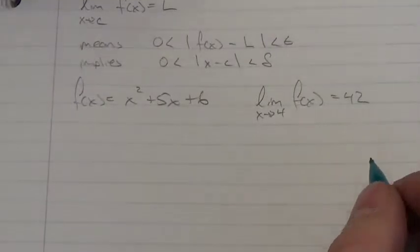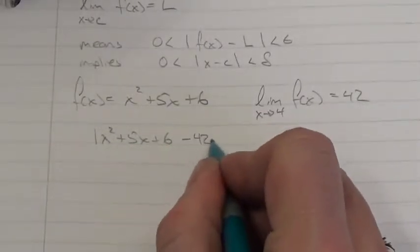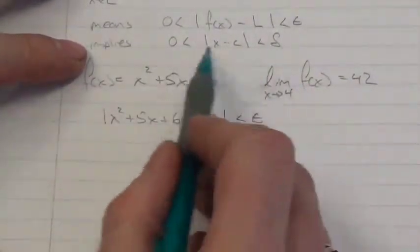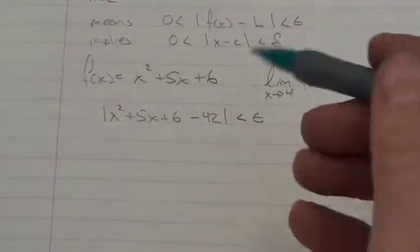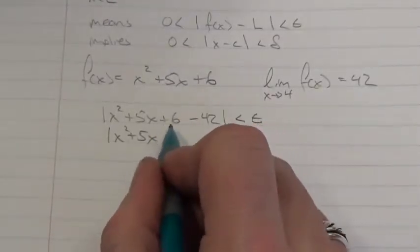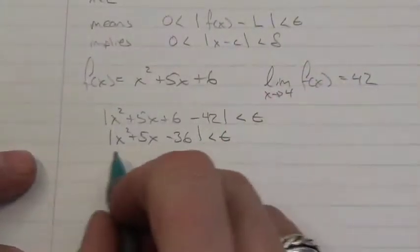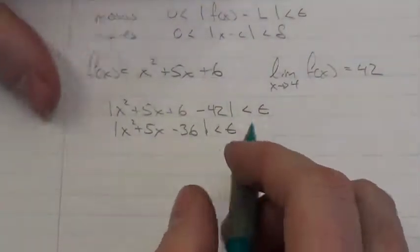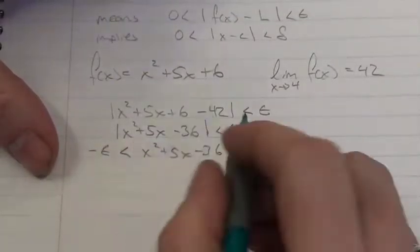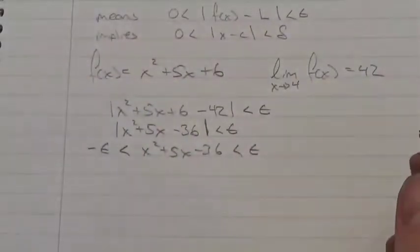What does that mean? It means that |x² + 5x + 6 − 42| < ε. We're going to show this implies a statement about |x − c|, the value we're approaching. First, we simplify: x² + 5x + (6 − 42) gives x² + 5x − 36. Dropping the absolute values, that expression must lie between −ε and +ε. If the absolute value of an expression is less than some number, it must fall between those two extremes.